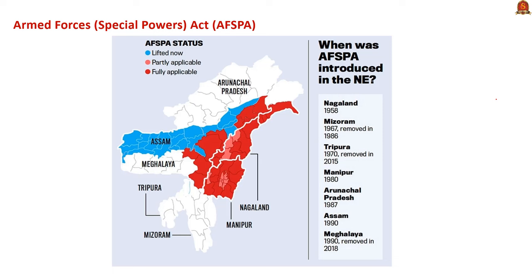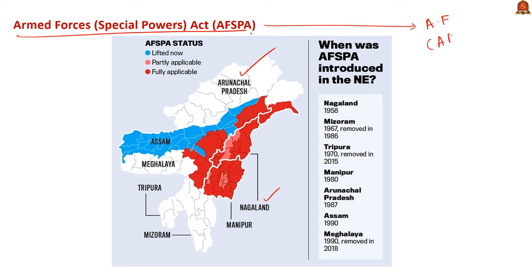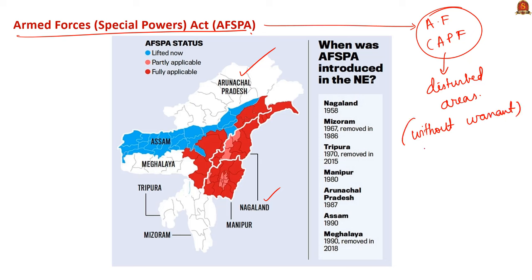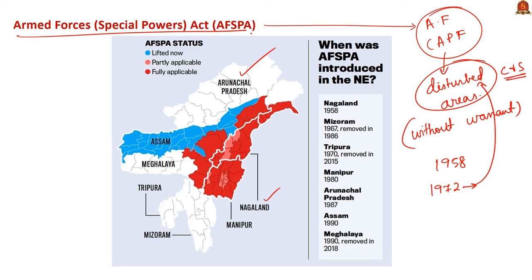Recently, the Ministry of Home Affairs extended the Armed Forces Special Powers Act (AFSPA) in parts of Arunachal Pradesh and Nagaland for another six months. This Act gives unfettered powers to armed forces and Central Armed Police Forces deployed in disturbed areas — including power to kill anyone in contravention of law and to arrest and search without a warrant. This law first came into effect in 1958 to deal with the uprising of Nagas. The Act was amended in 1972, and powers to declare an area as disturbed were conferred concurrently on the Central Government and states. Tripura revoked this Act in 2015 and Meghalaya was under AFSPA for 27 years until it was revoked in 2018. Currently, this Act is applied in some parts of Assam, Nagaland, Manipur, and Arunachal Pradesh.